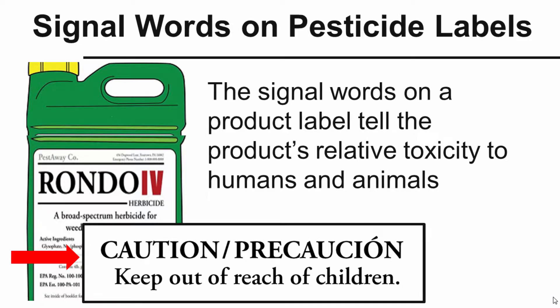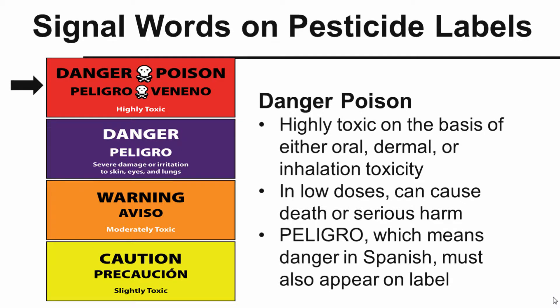Here we see the signal word 'Caution.' I like to go through the four groupings of signal words used on pesticide labels, starting at the top — the most toxic of all the products. You're going to see the words 'Danger/Poison' on this type of label. They're highly toxic on the basis of either oral, dermal, or inhalation toxicity, meaning that even in very low doses they can cause death or serious harm. All signal words also appear in Spanish on the label. 'Danger/Poison' always has the skull and crossbones — another visual clue of how dangerous the product is.